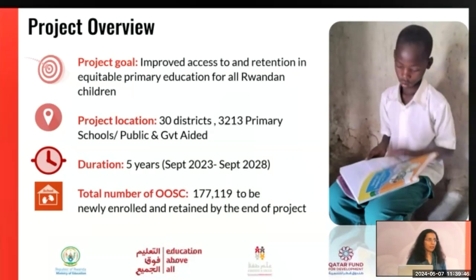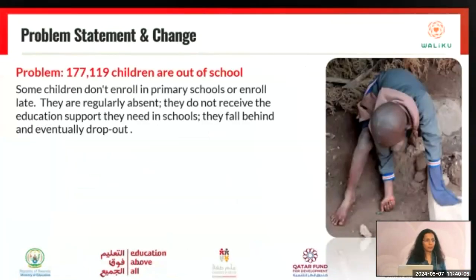The total number of out-of-school children the project hopes to identify is 177,000 plus, and to ensure that once identified, they are enrolled into school and continue to stay in school through the end of the project — so 100 percent retention of all out-of-school children.